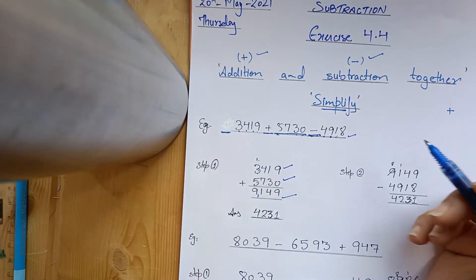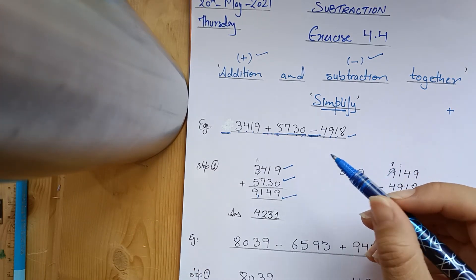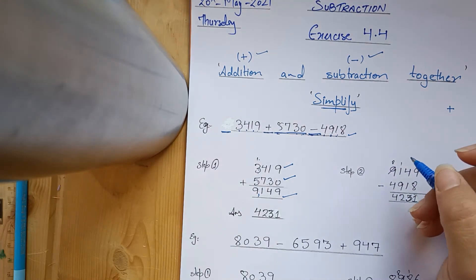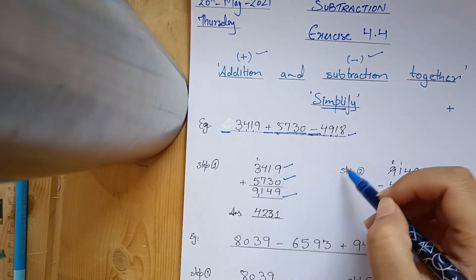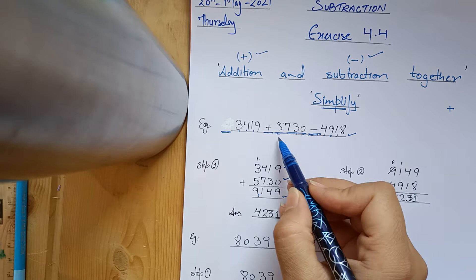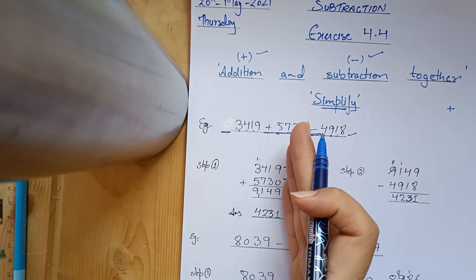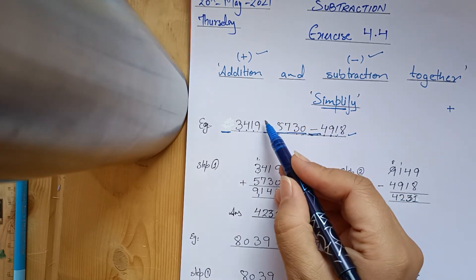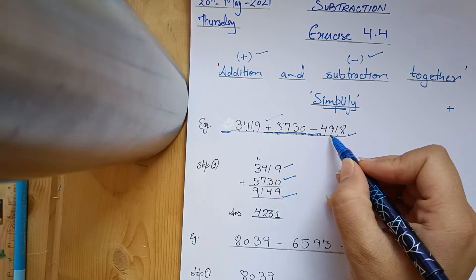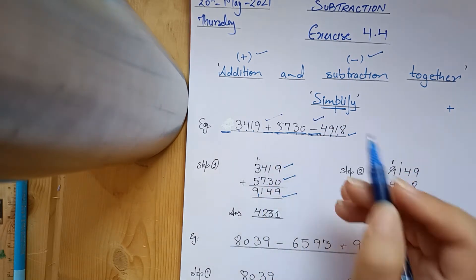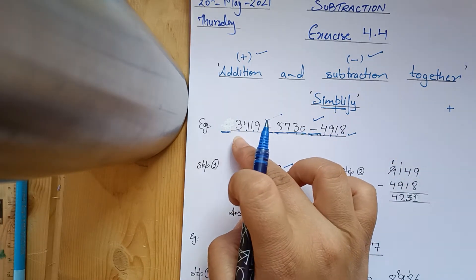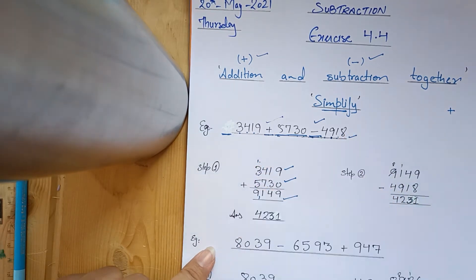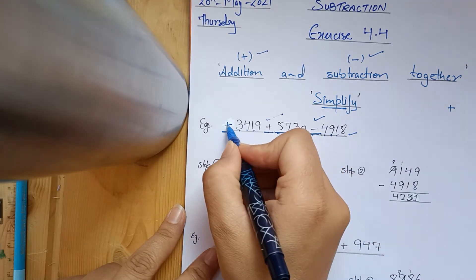3,419 plus 5,730 minus 4,918. This is the sum of our numbers. When we see this type of question, the sign is always given with the number. So 5,730 has a plus sign, and 4,918 has a minus sign. Once you have identified the sign, we will add it to the sign group.